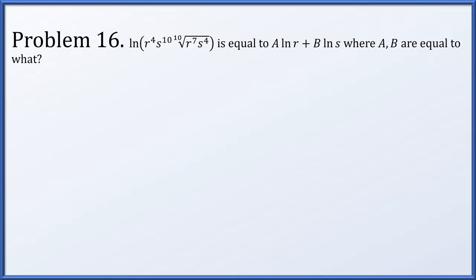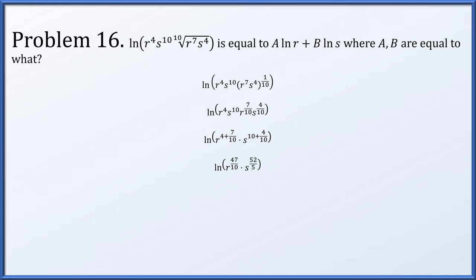Problem 16: the natural log of r to the 4th times s to the 10th times the 10th root of r to the 7th s to the 4th equals some multiple of ln r plus some multiple of ln s — find those multiples. Replace the 10th root with an exponent of 1/10, distribute that exponent across r to the 7th and s to the 4th, then combine exponents: r to the 4th times r to the 7/10 gives r to the 47/10, and s to the 10th times s to the 4/10 gives s to the 52/5 (after simplifying). Breaking up as a sum and bringing exponents out as scalar multiples gives 47/10 times ln r plus 52/5 times ln s.